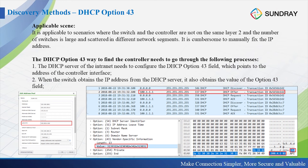The next method is DHCP option 43. In a layer 2 environment, broadcast works fine. But in a layer 3 environment, broadcast messages cannot cross routers, so we need another way to discover devices. The recommended approach is DHCP option 43.